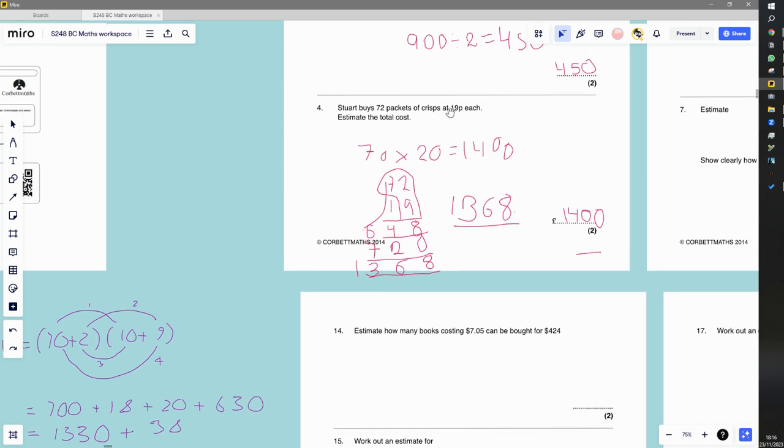So estimation, we just 72 times 19 is the same as... Well, it's not the same, but it's similar to 70 times 20, which is 1,400. So 1,400 is an estimate of what we would get.